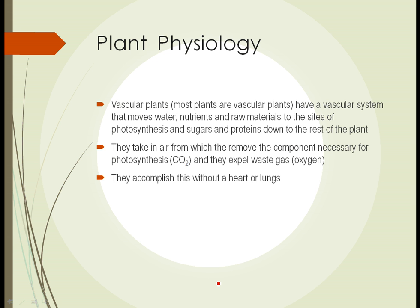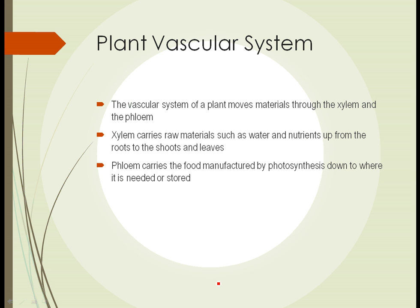This vascular system has an analog in humans — we have a blood system and a lymph system that moves materials around our body to places where they're needed. Plants do that through their vascular system. They take in air through the leaves, remove the carbon dioxide they need for photosynthesis, use it in photosynthesis, and expel the waste gas — oxygen. They're able to accomplish all of this without a heart or lungs.